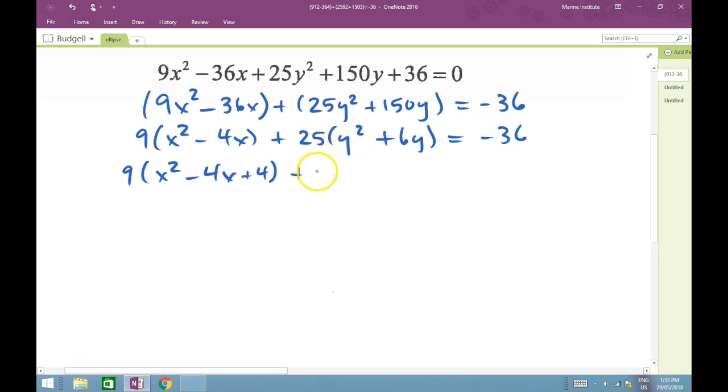Here we have the y's: 25(y² + 6y). Half of 6 is 3, 3 squared is 9. Again, I've changed my equation.